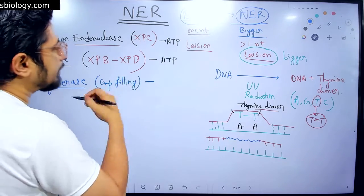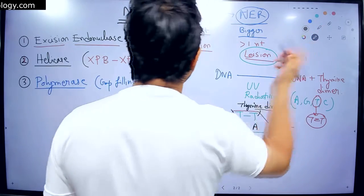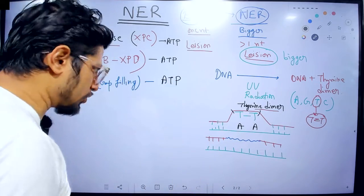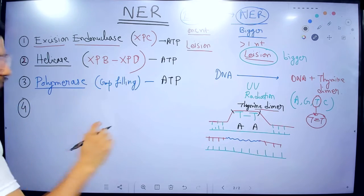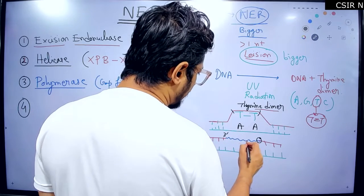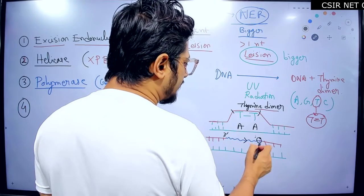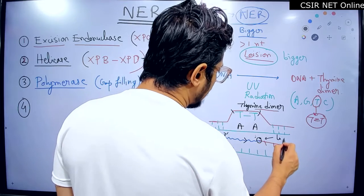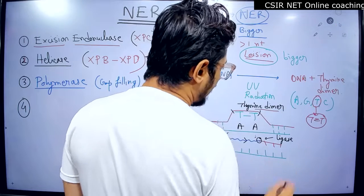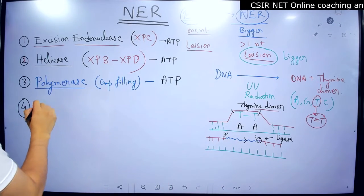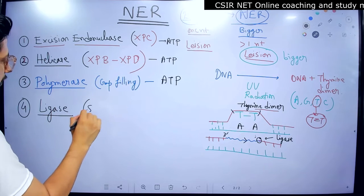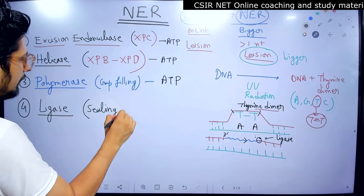DNA polymerase fills the gap. This process also requires energy in the form of dNTPs. Once the gap is filled, a nick will remain at the opposite end, since polymerase extends from the 3' hydroxyl. This nick must be sealed by ligase enzyme. DNA ligase seals the nick, and ligase also requires energy from ATP hydrolysis to complete this step.